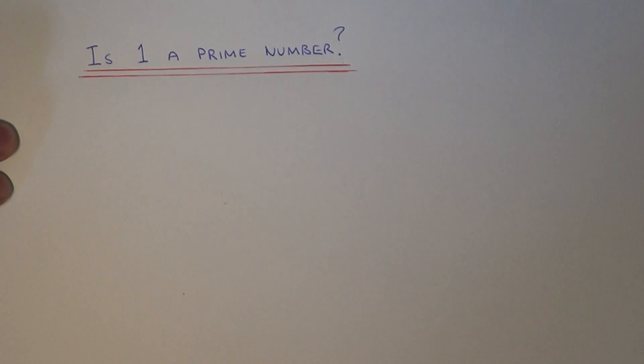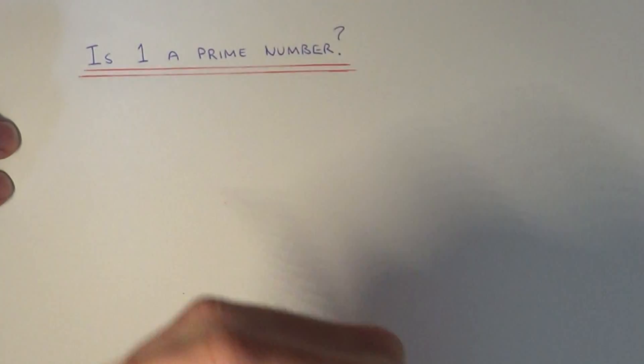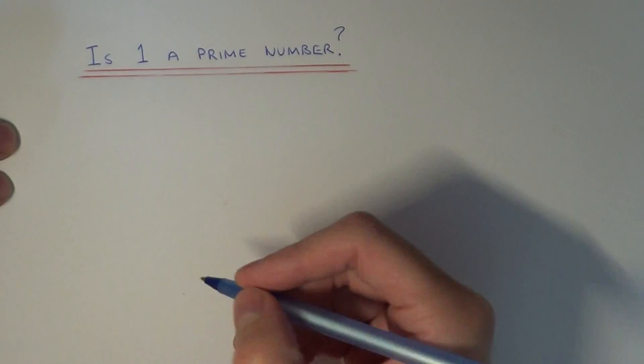So 1 won't be a prime number, because it has to have exactly two factors.